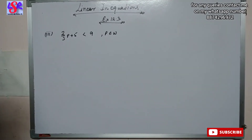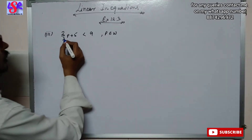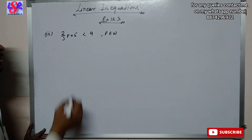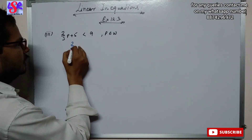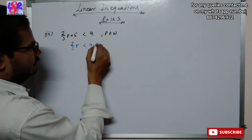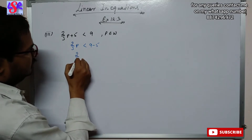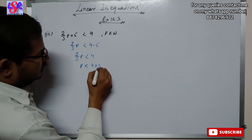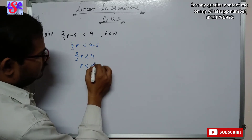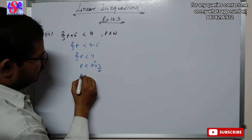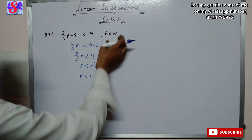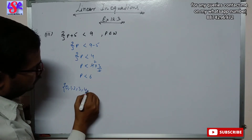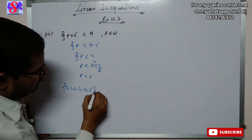Now let us move to the third part. Here we have (2/3)p plus 5 is less than 9 where p is the element of whole number. So (2/3)p is less than 9 minus 5, giving (2/3)p is less than 4. Therefore p is less than 4 into 3 upon 2, which simplifies to p is less than 6. As p is an element of whole number, the answer is 0, 1, 2, 3, 4 and 5.